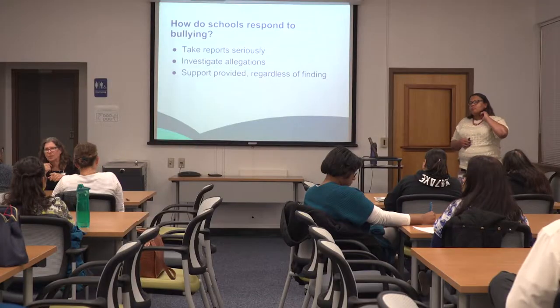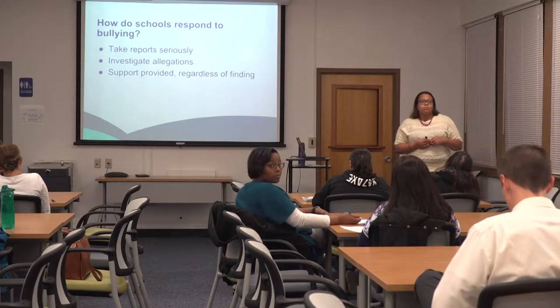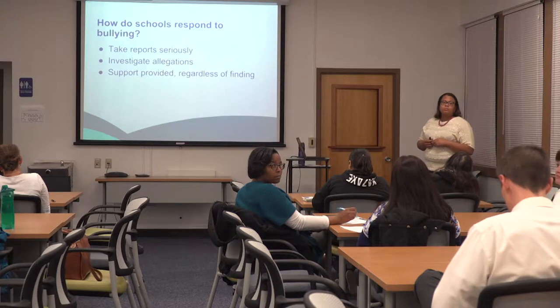If you believe bullying is not being handled appropriately at school, start with whoever you've already been in contact with — if it's an assistant principal, go to the principal. If not resolved at the school level, you can go to your executive principals and up the hierarchy. The tip line numbers are provided to students, though each school distributes that information differently.